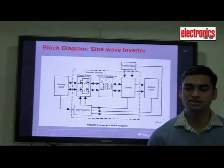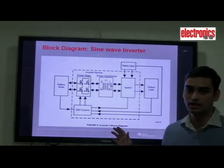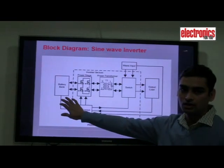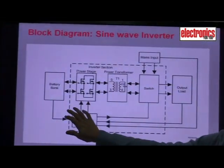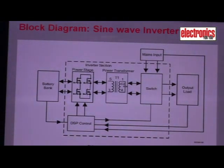So our first topic is the basic block diagram of sine wave inverter. Here you can see the basic block diagram of sine wave inverter. It consists of a battery bank which is generally a lead acid battery which can be 12V, 24V or 48V depending on the voltage requirement of your inverter.